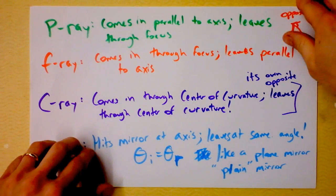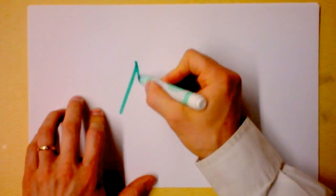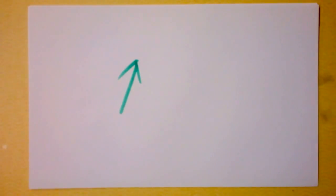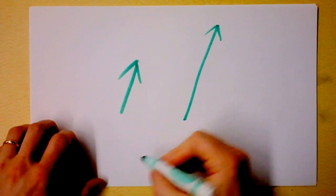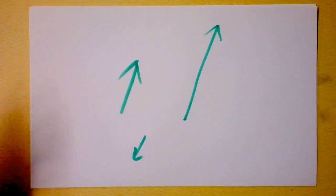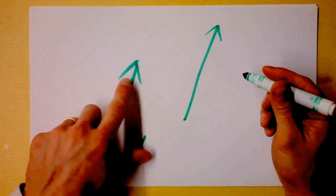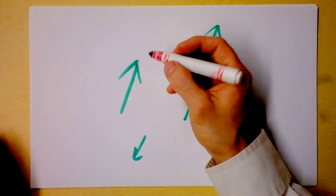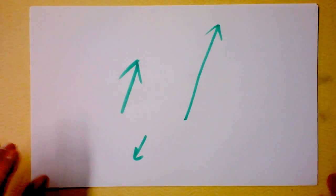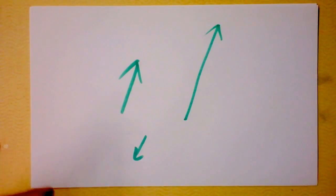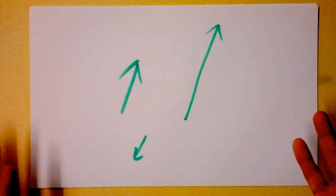Ground rule number two: when there is an object — and my object's going to kind of be like this thing right here — it represents any possible thing. If this object gets bigger, it would look like that, and if it flipped over, it would look like that.